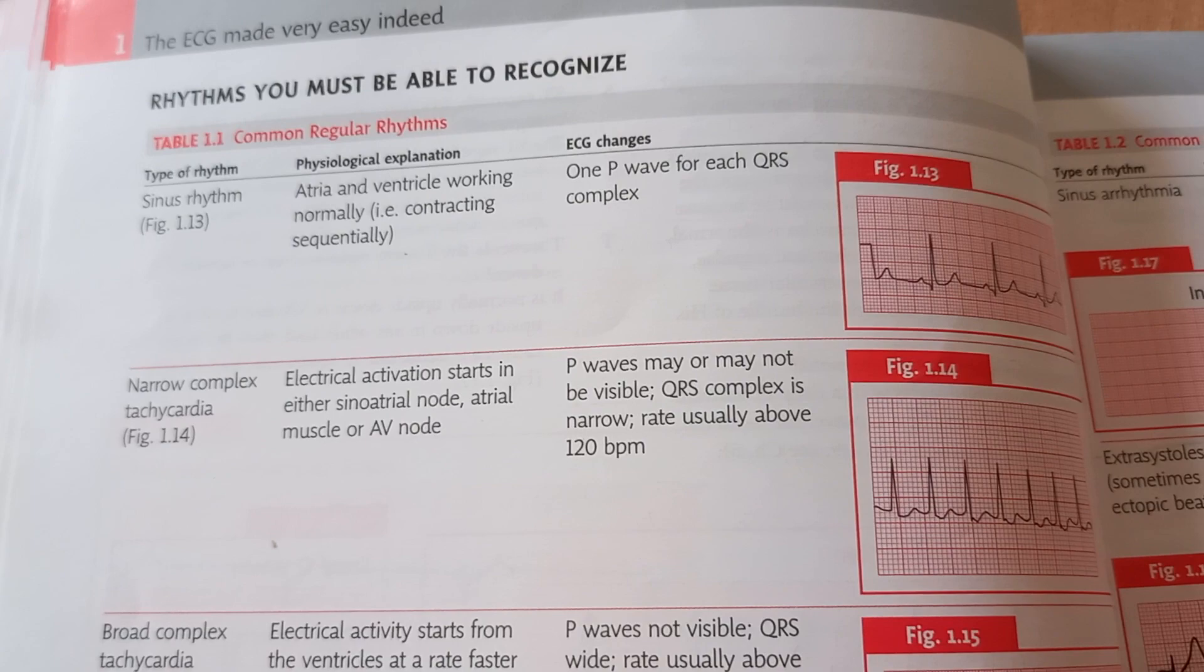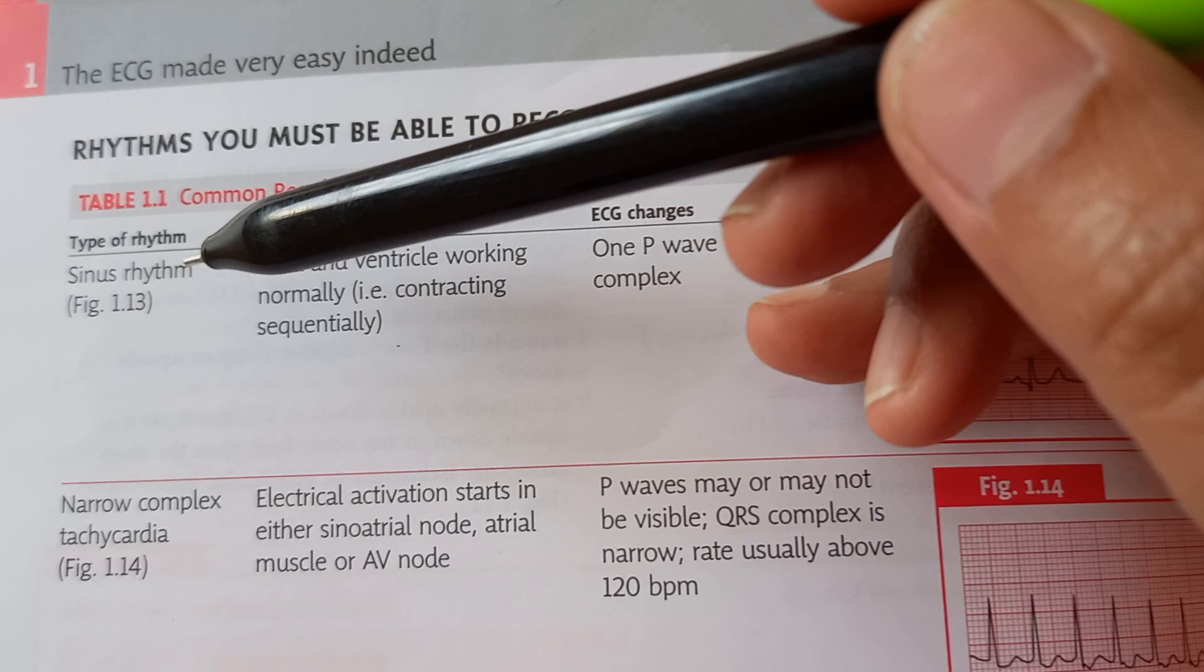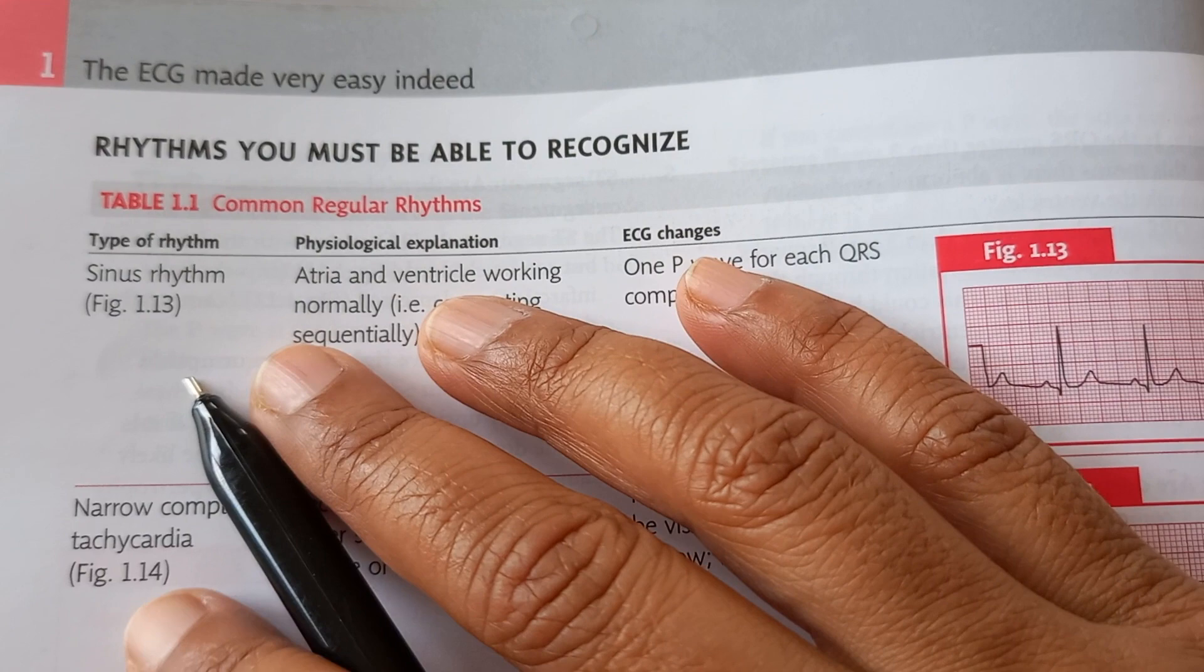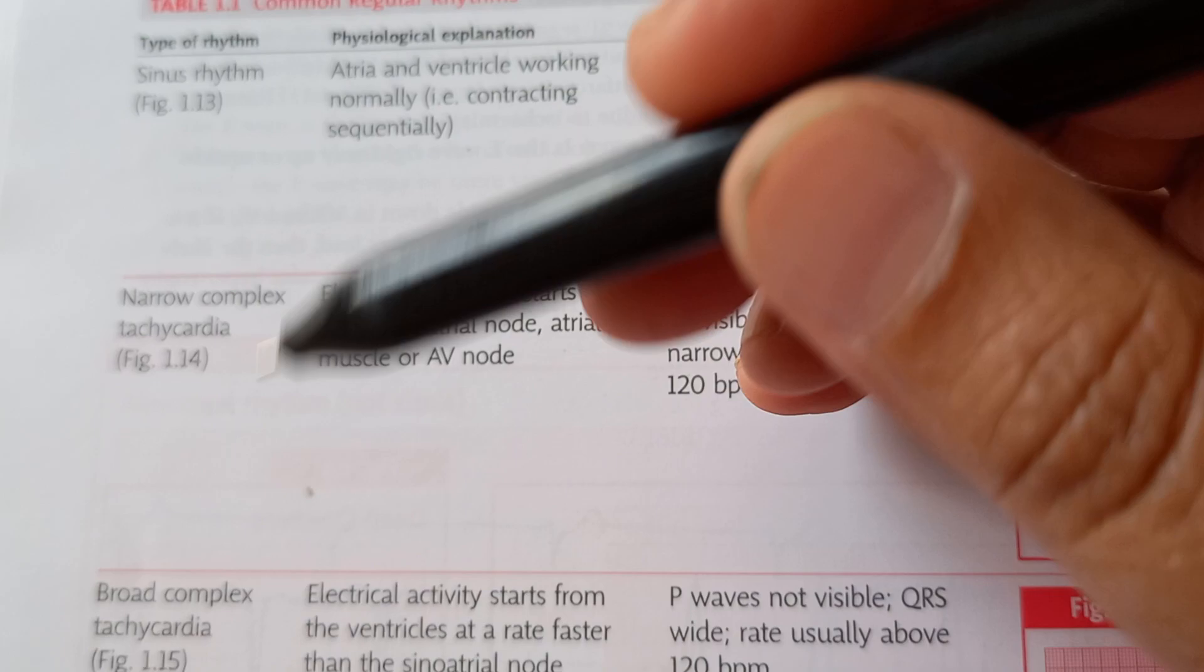After rate comes rhythm. What are the types of rhythm? Sinus rhythm—this is what is normal. It is coming from the sinoatrial node; that is what it means. You should have this P wave, so one P wave for each QRS complex. If it is there, then they are saying it is a sinus rhythm. This is normal.